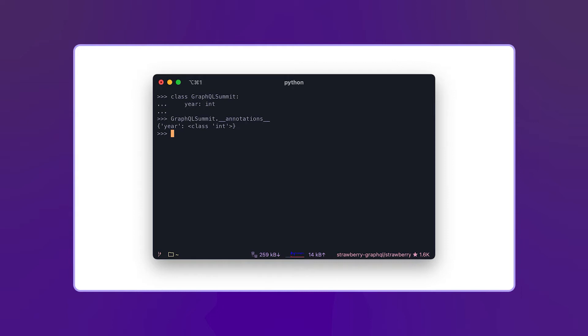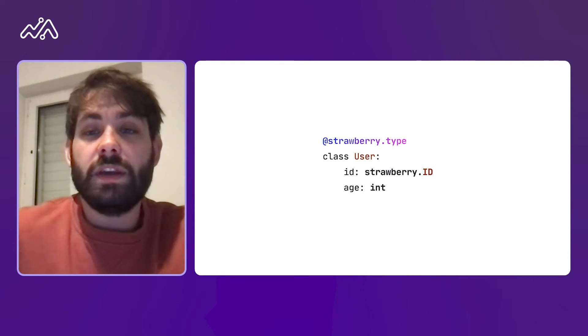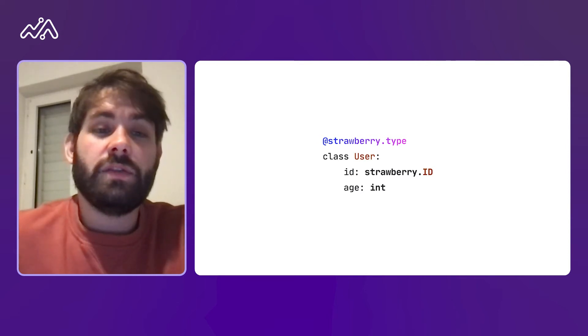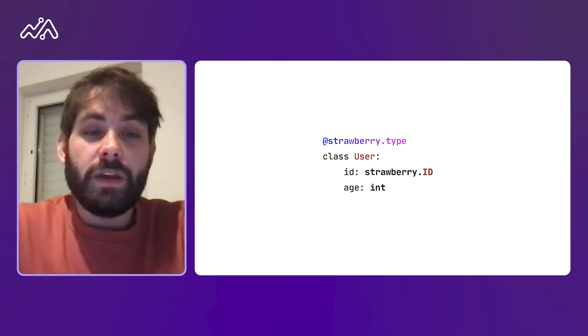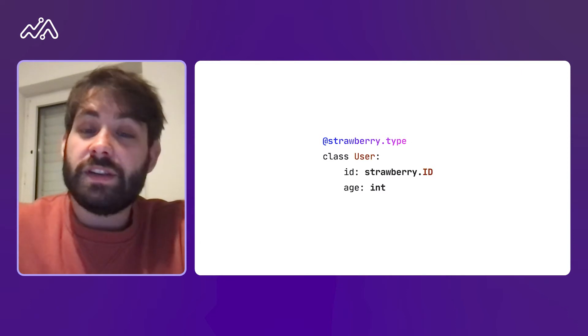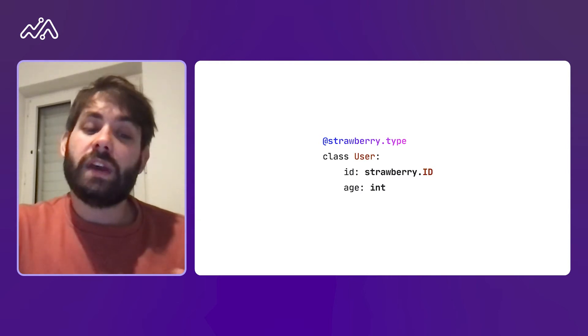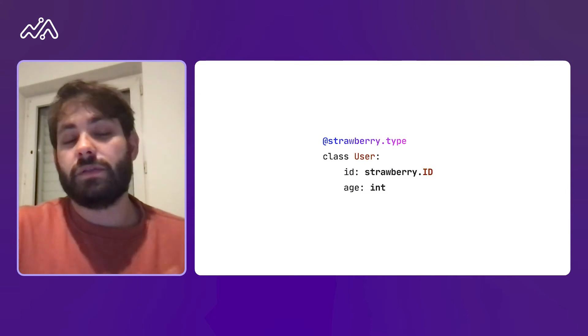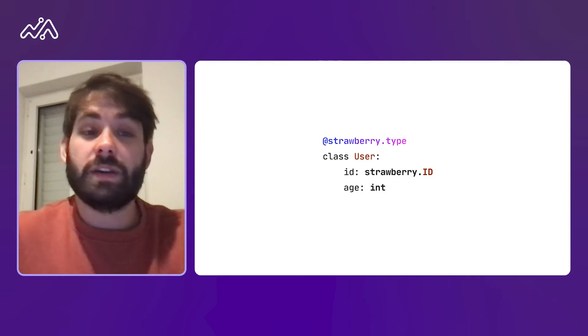So let's see how we can define the actual types using Strawberry. In this example we are defining a user type with two fields — the ID of type ID and the age of type int. The Strawberry type decorator reads the type hints at runtime and creates GraphQL types based on them. I personally find this syntax very neat and similar to the SDL you write when using a schema-first library, but it also gives you the advantage of being able to use type annotations in Python.